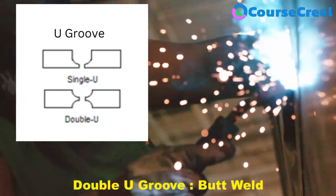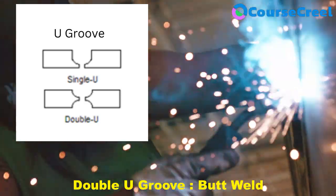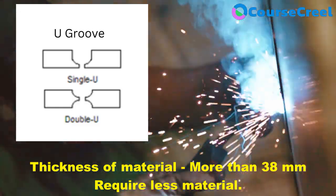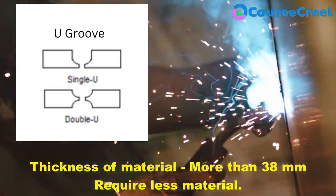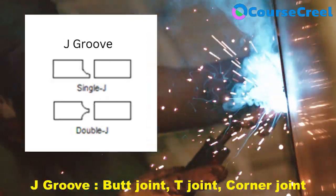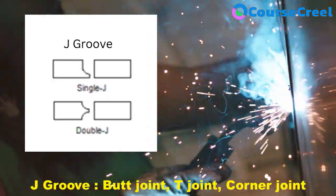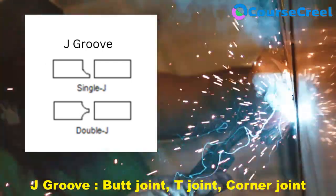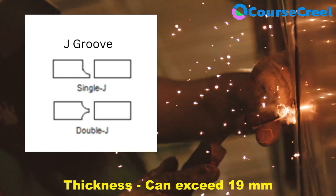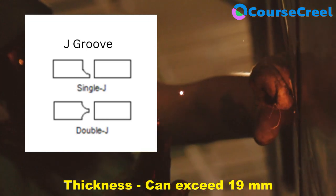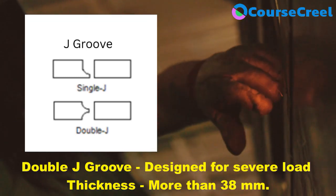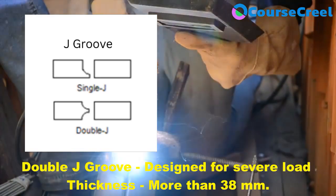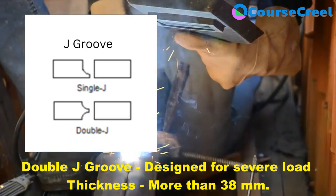Double U groove is mainly used for butt welds where the thickness of the material may exceed 38 mm. It is easily welded and requires less material. For J groove, it is mainly applicable on butt joint, T joint, and corner joint where the material thickness can exceed 19 mm. For double J groove, it can withstand severe loads and is recommended for more than 38 mm thickness.